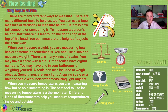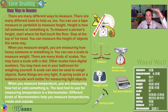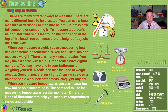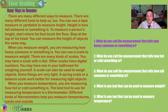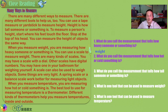A spring scale or a balance scale work better for measuring light objects — they are more fine-tuned. So we have measured height and weight. What about temperature? This is how we measure if something is hot or cold, if the day is sunny or freezing, or whether you're sick and have a fever. The best tool for measuring temperature is a thermometer, and different kinds of thermometers help you measure temperatures inside and out.